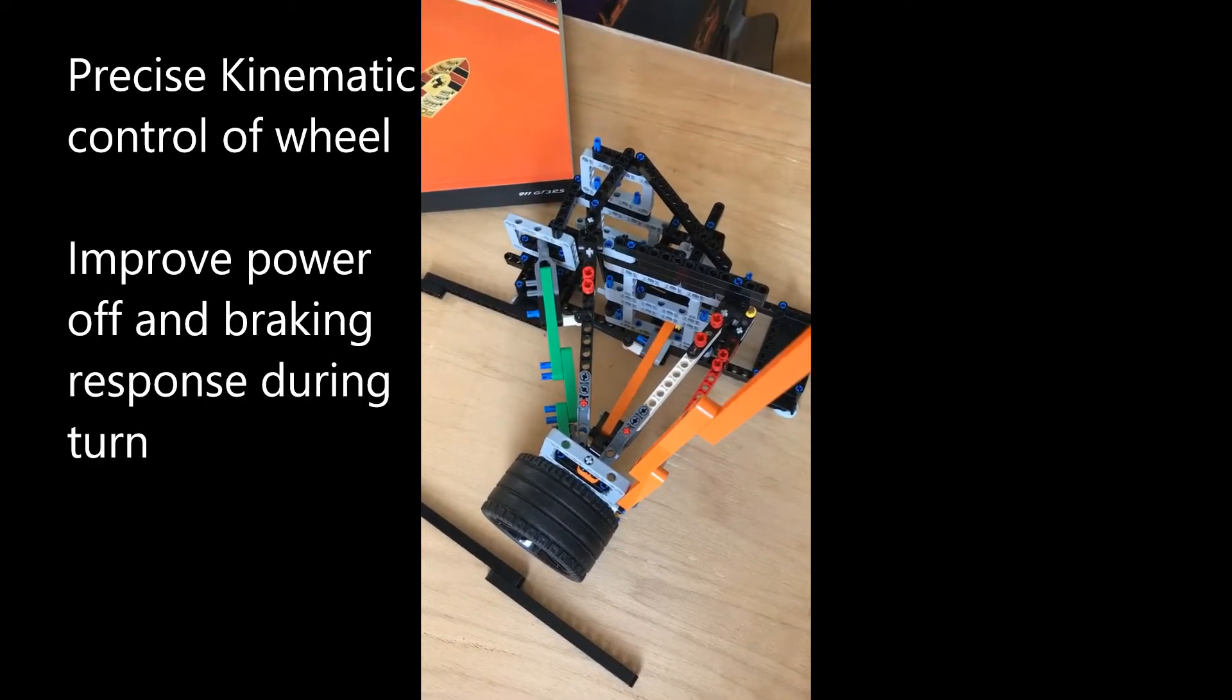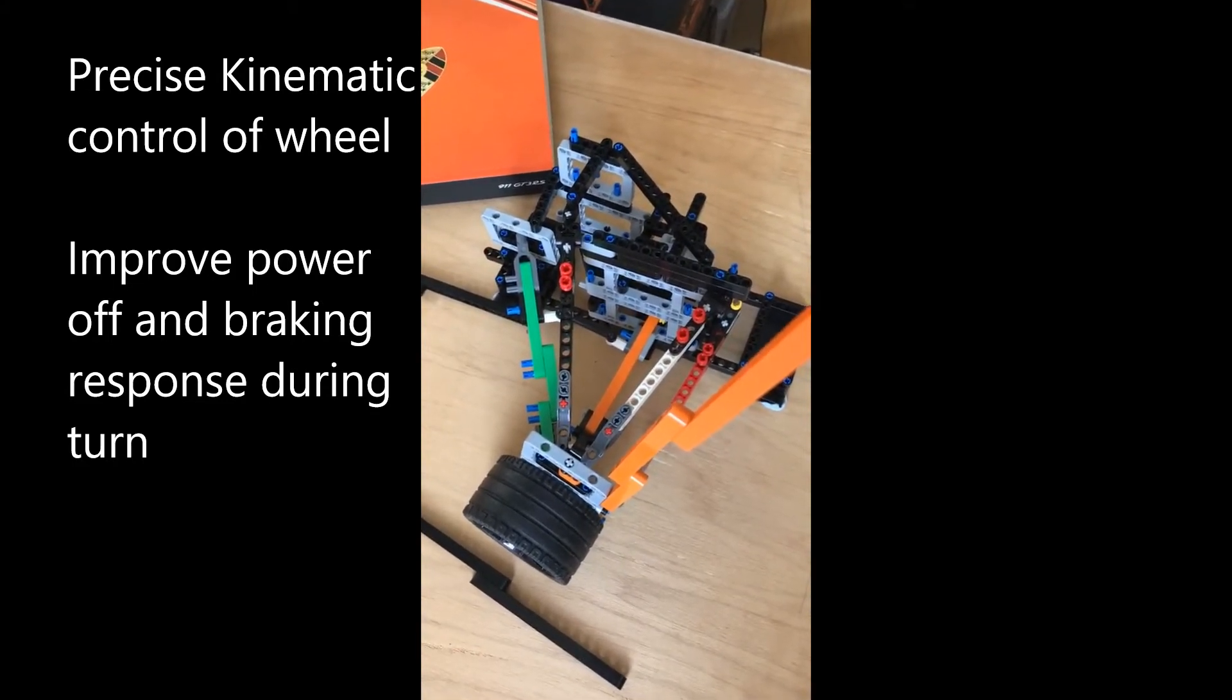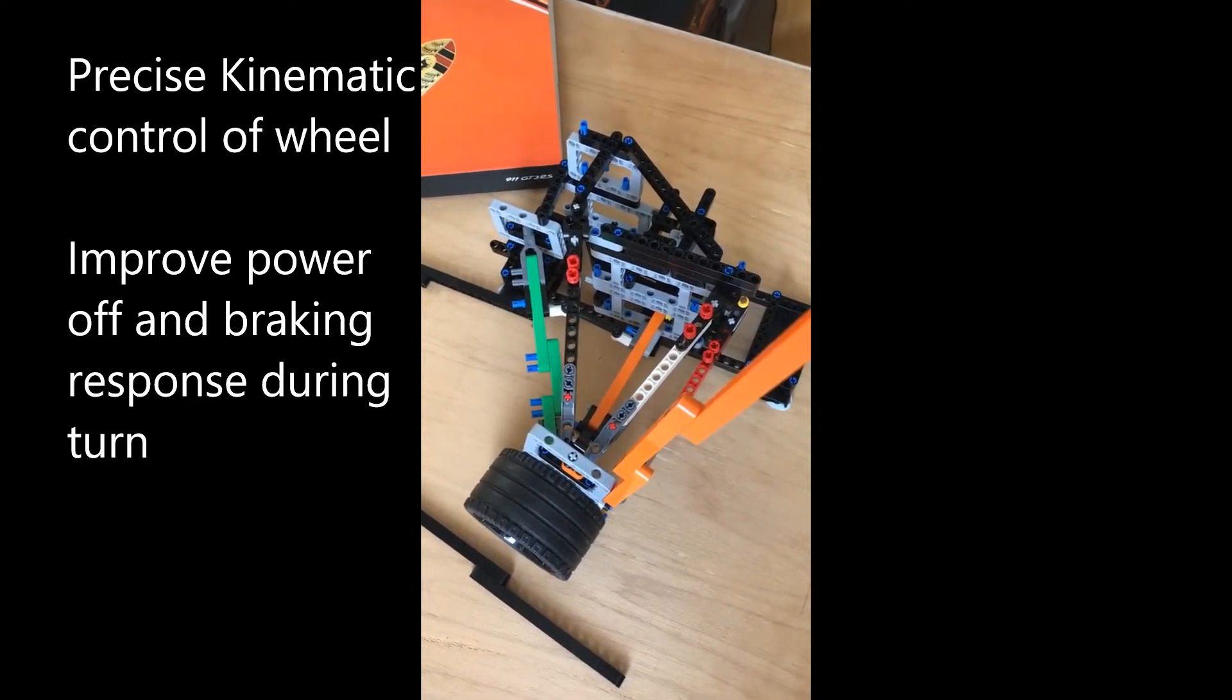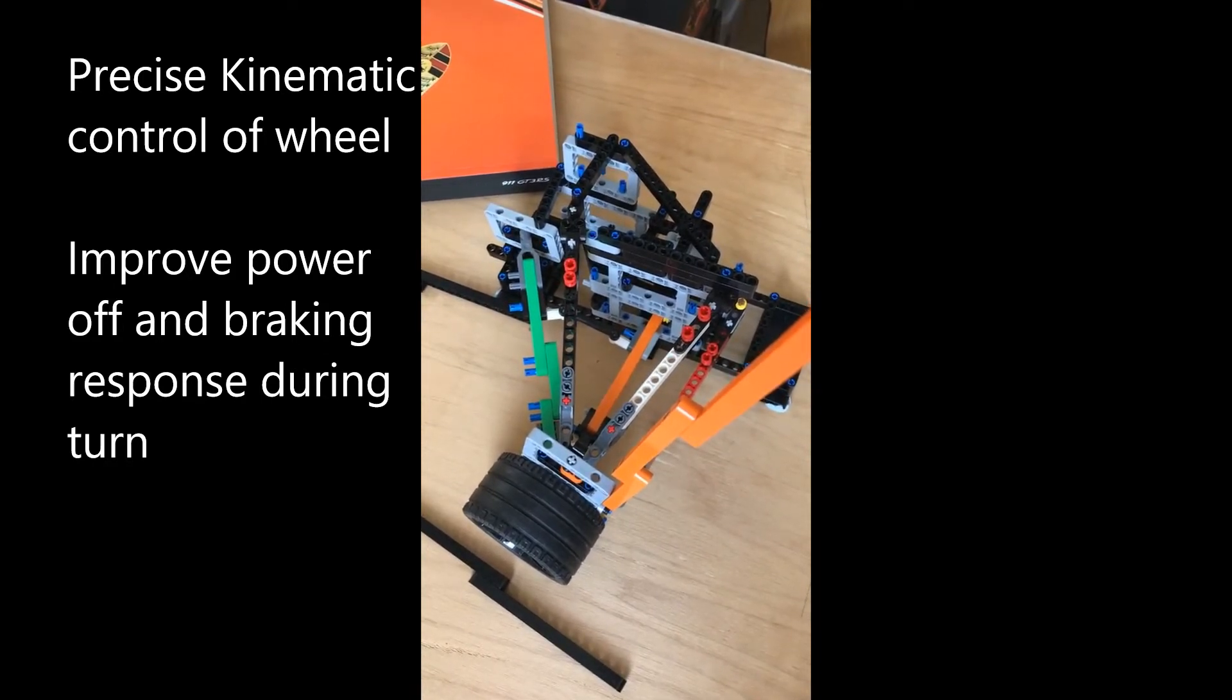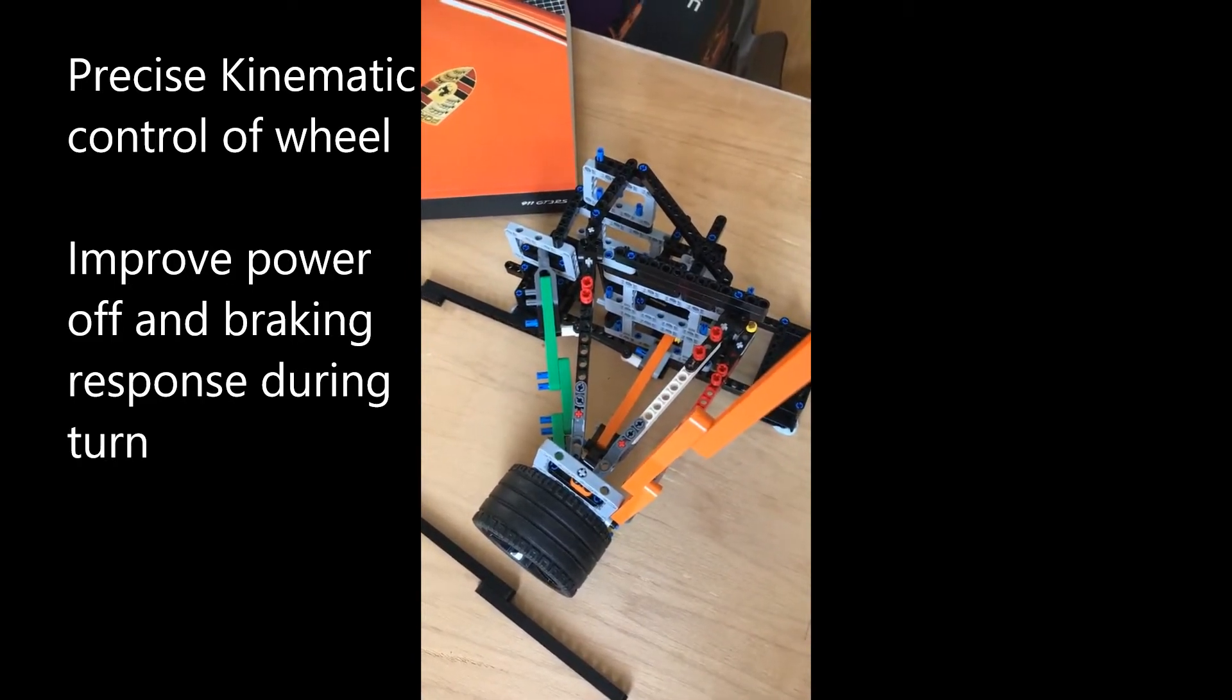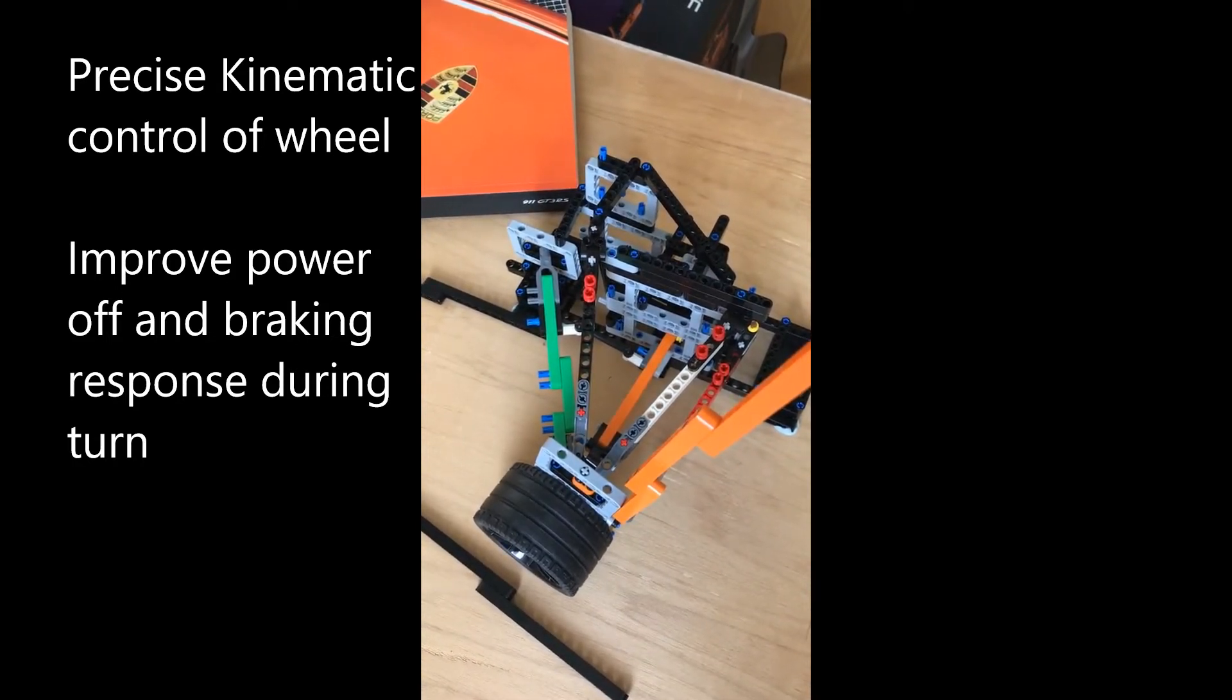What Porsche had always been worried about is what the car would tend to do, what the 911 would tend to do if in a turn there was a lift off or a braking maneuver, which would then upset the balance of the car and the car would tend to rotate into oversteer. So this axle was designed to counter the possibility of lift off or braking in turn.